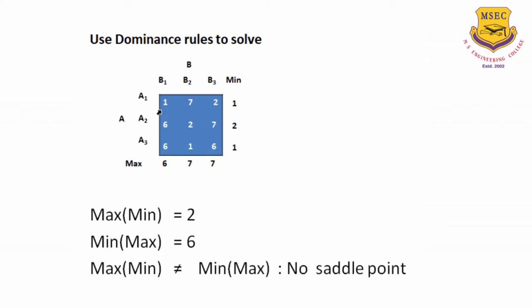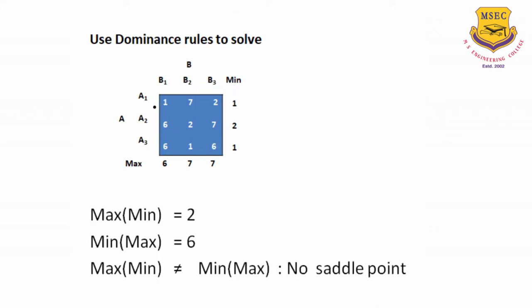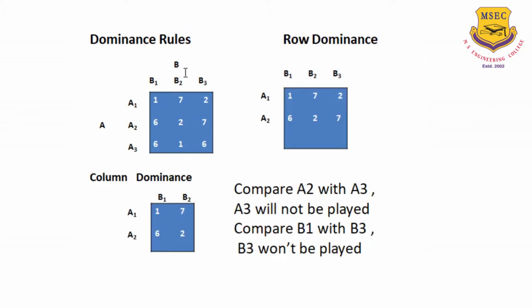Now let's take a simple problem in which A plays three strategies — A1, A2, A3 — and B plays B1, B2, B3. Let's see whether this problem has got a saddle point, since we have to determine that first before going to other procedures. The minimum of the first row is 1, the second is 2, the third is 1, and the maximums are 6, 7, 7. Max of the minimum values is 2, min of the maximum values is 6. Therefore max-min is not equal to min-max, so there is no saddle point.